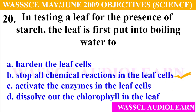Question 20: In testing a leaf for the presence of starch, the leaf is first put into boiling water to — A. Harden the leaf cells, B. Stop all chemical reactions in the leaf cells, C. Activate the enzymes in the leaf cells, D. Dissolve out the chlorophyll in the leaf cells. And the answer is B, stop all chemical reactions in the leaf cells.